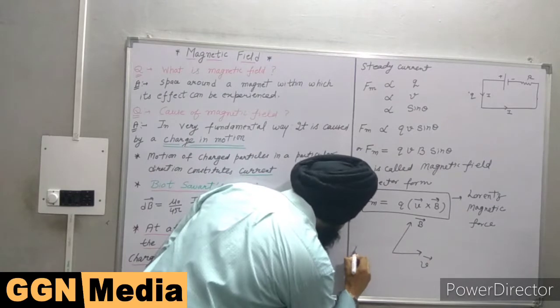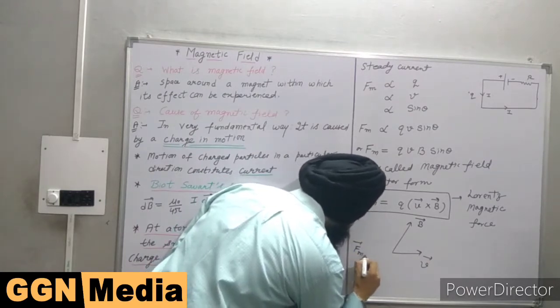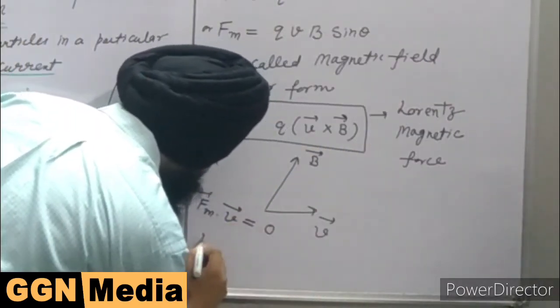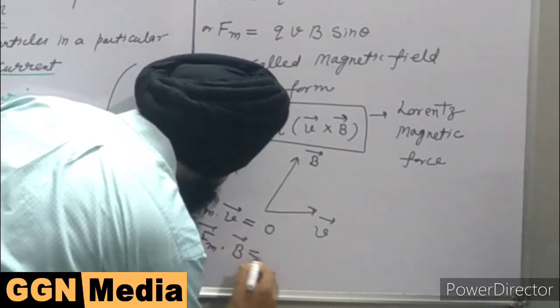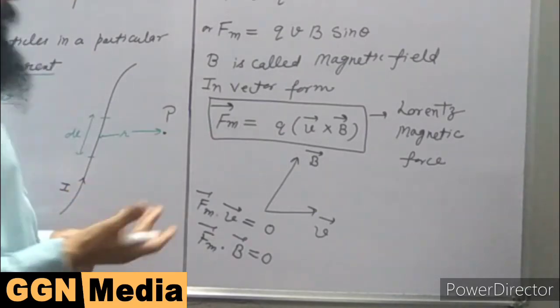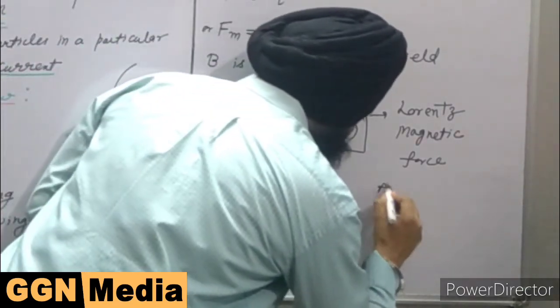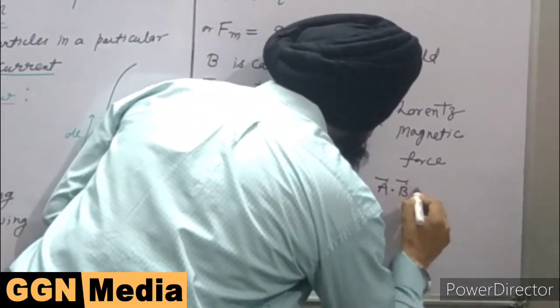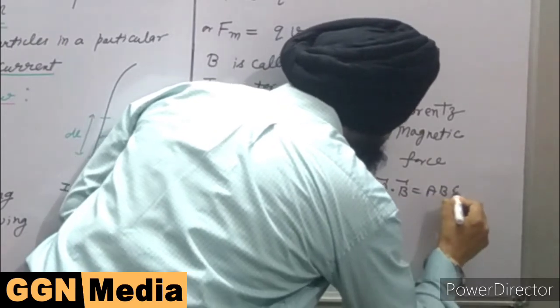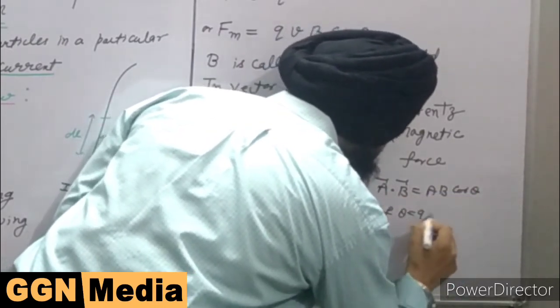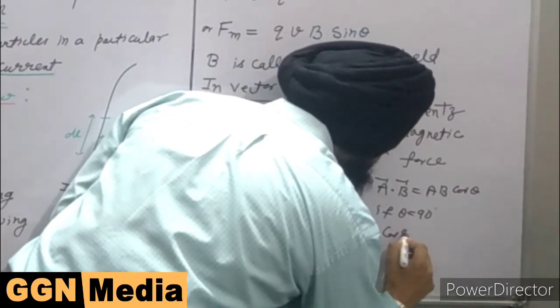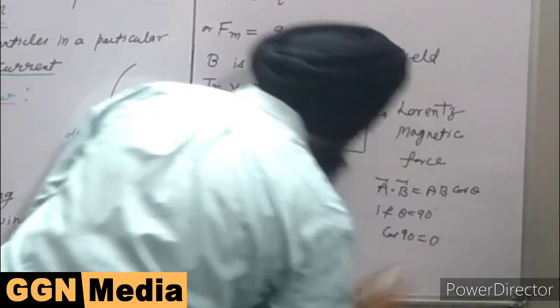If two vectors are perpendicular, then their dot product is always zero. So we can say that Fm dot v is zero and Fm dot B is zero, because dot product says that A dot B is equal to AB cos theta. If theta is 90 degrees, then cos 90 will always be zero.